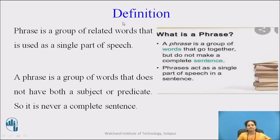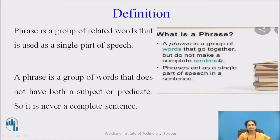Now let us see the definition of phrase. First we are discussing about phrase, and then we will discuss about idioms. A phrase is a group of related words that is used as a single part of speech. In other words, a phrase is a group of words that does not have both a subject and predicate, so it is never a complete sentence. A phrase is a group of words that go together but do not make a complete sentence, or phrases act as a single part of speech in a sentence.